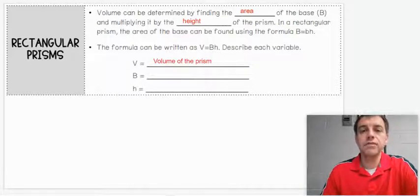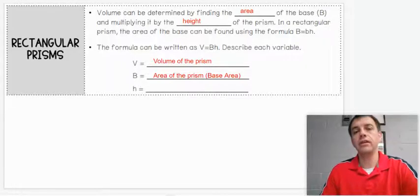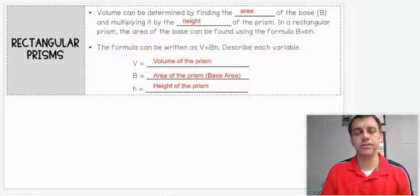Let's describe each variable. V stands for the volume of the prism. The uppercase B is area of the prism, but you're going to hear me call it base area. It's all determined by the object on the bottom or the shape on the bottom. And H, as you know, is the height of the prism. That term is not changing. Let's get into some actual examples now.